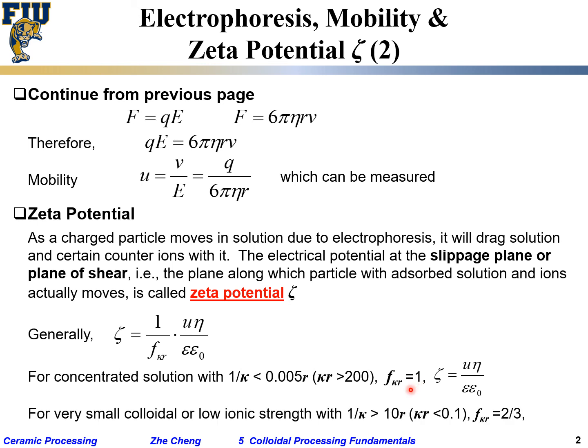For very small colloidal particle size or low ionic strength with not many electrolytes, the Debye length becomes relatively large - the balance sticking out into solution becomes 10 times larger than your particles, like platinum or nano two-three nanometer particles. In those cases, we have a different f factor and a slightly different zeta potential equation. The zeta potential is related to mobility and viscosity of the suspension.